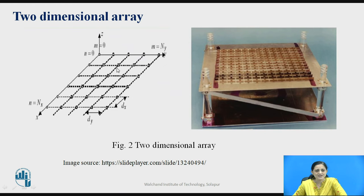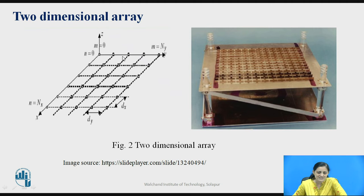This is the figure for the two dimensional array. The z axis, y axis, and x axis are shown. The number of elements are placed along the x axis and along the y axis. By taking the combination of x and y axes, the elements are connected to form the array. Each element on the x axis is separated by distance dx, whereas on the y axis each element is separated by distance dy. Thus the two dimensional array is formed on the x-y plane.